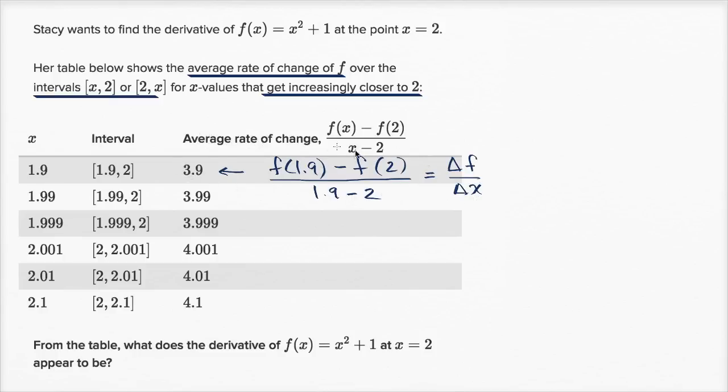What is the average rate of change of our function over that interval? Between 1.9 and 2, she got 3.9. Then she gets closer to 2. Between 1.99 and 2, it becomes 3.99 - it looks like it's getting closer to 4. She gets even closer to 2, and the average rate of change gets even closer to 4.